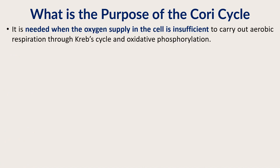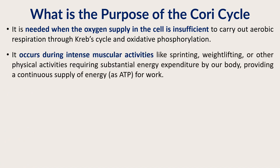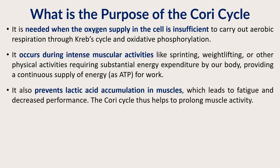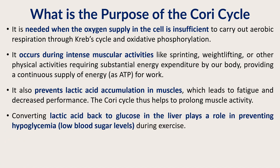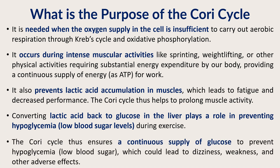What is the purpose of the Cori cycle in our body? It is needed when oxygen supply in cells is insufficient, resulting in lactic acid as the end product. It occurs during intense muscular activity such as sprinting, weight lifting, and other high-demand activities. It prevents lactic acid accumulation in muscles, thereby decreasing fatigue and increasing performance. Converting lactic acid back to glucose in the liver helps prevent hypoglycemia. The Cori cycle ensures a continuous supply of glucose to muscles, preventing dizziness, weakness, and other adverse effects.